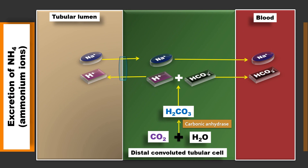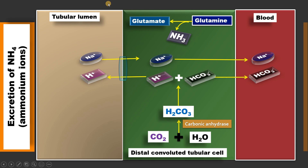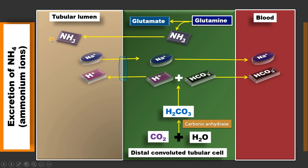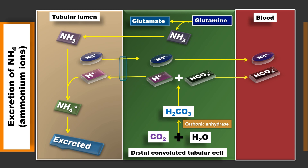The last step is excretion of ammonium ions. In the tubular cells there is glutamine, which can be converted to glutamic acid with release of ammonia. Glutamic acid can also undergo deamination to give ammonia and alpha-ketoglutarate. Both these compounds release ammonia predominantly in the distal convoluted tubular cells. This ammonia is transported to the tubular lumen, where it combines with hydrogen ion to form ammonium, which is excreted. Ammonia can also combine with chloride — a component of the ultrafiltrate — and be excreted in the urine as ammonium chloride.